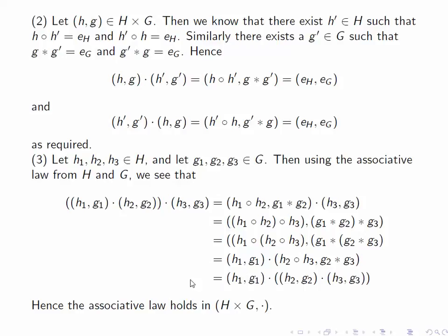So we get that the two ways of multiplying the three elements together are equal, that is the associative law holds in H cross G. So we've proved that this operation does indeed define a group operation on H cross G.